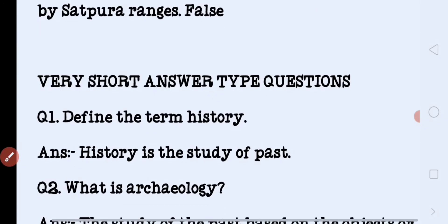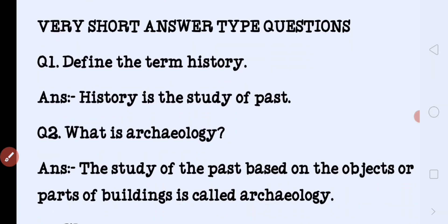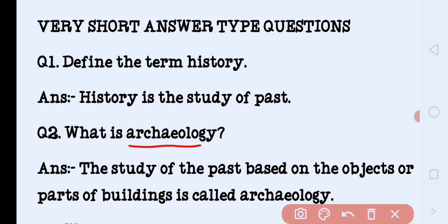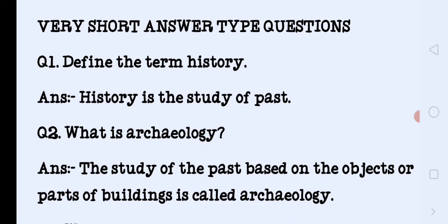Now very short answer type questions. Define the term history: history is the study of the past. What is archaeology? The study of the past based on objects or parts of buildings is called archaeology. Jab purane objects aur buildings ke nishan milte hain, unki study karna — that is archaeology.